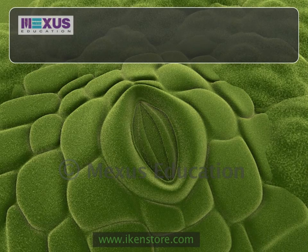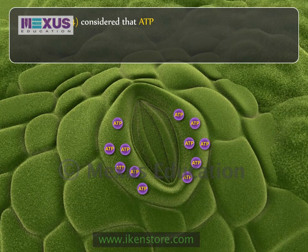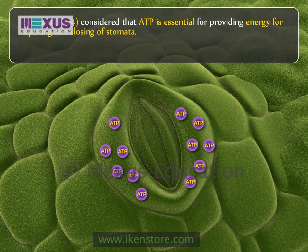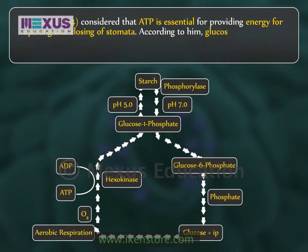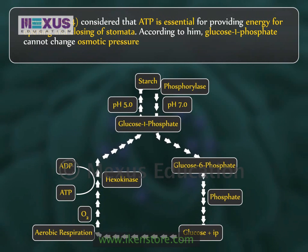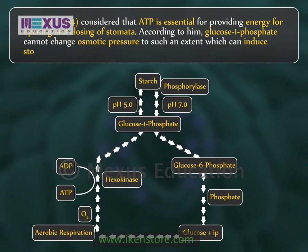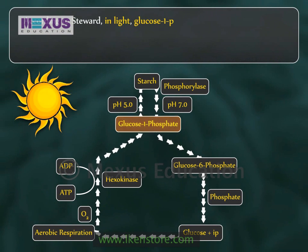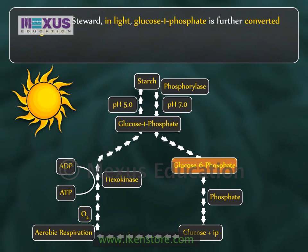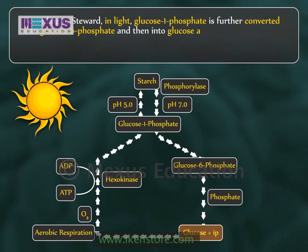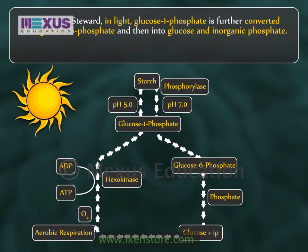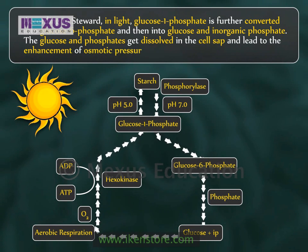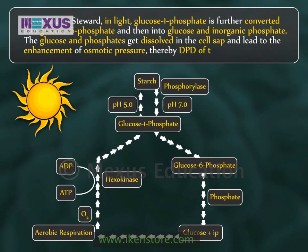Steward, in 1964, considered that ATP is essential for providing energy for opening and closing of the stomata. According to him, glucose 1-phosphate cannot change osmotic pressure to such an extent which can induce the stomata to open. According to Steward, in light, glucose 1-phosphate is further converted into glucose 6-phosphate and then into glucose and inorganic phosphate. The glucose and phosphates get dissolved in the cell sap and lead to an increase in osmotic pressure, thereby increasing the DPD of the guard cells.